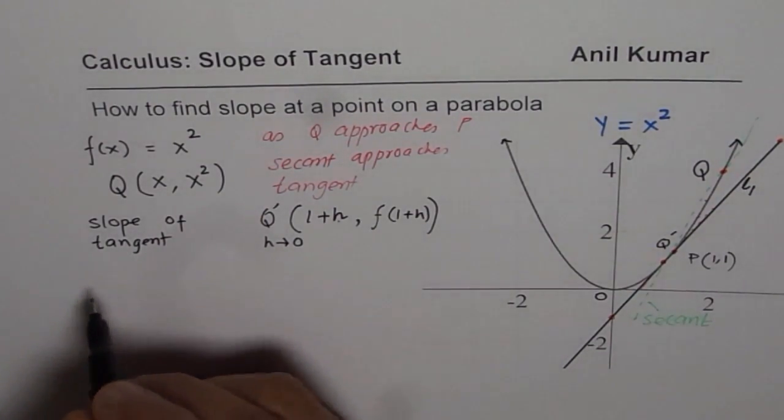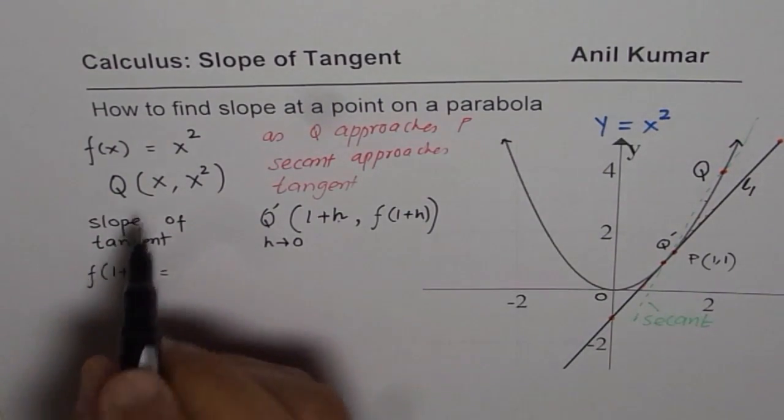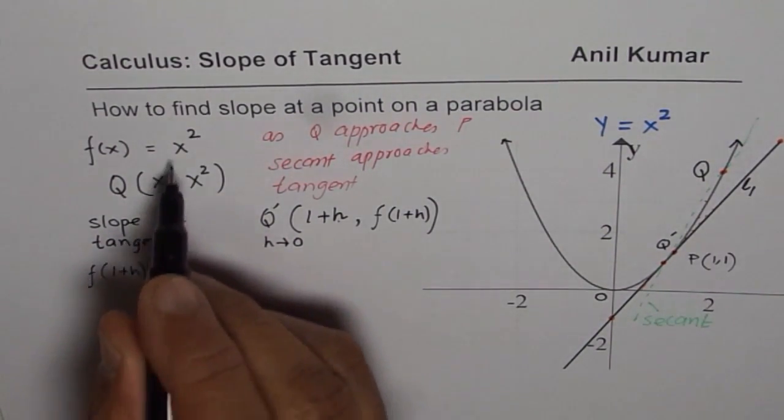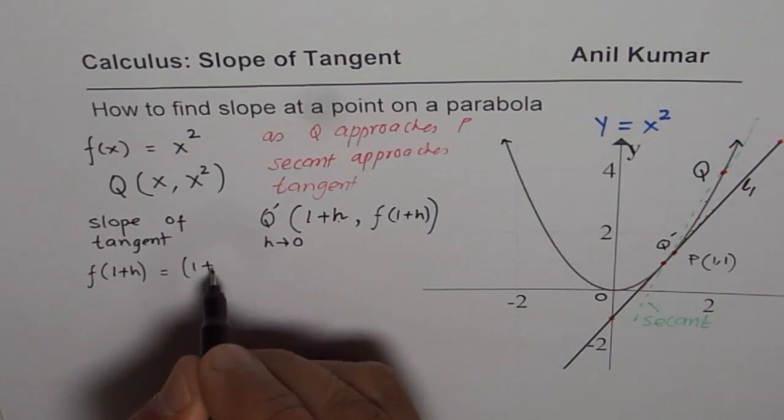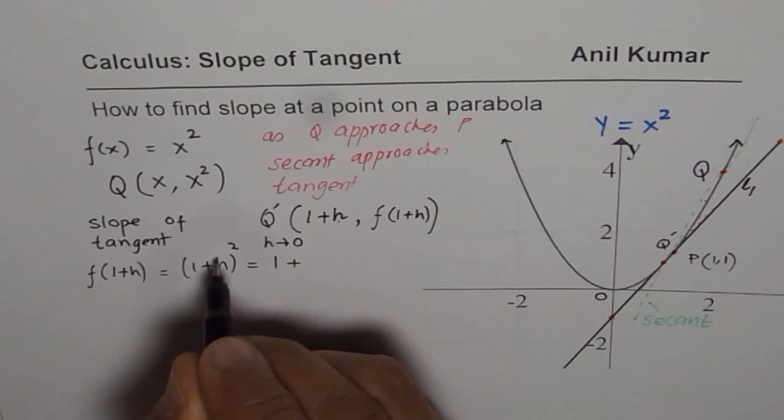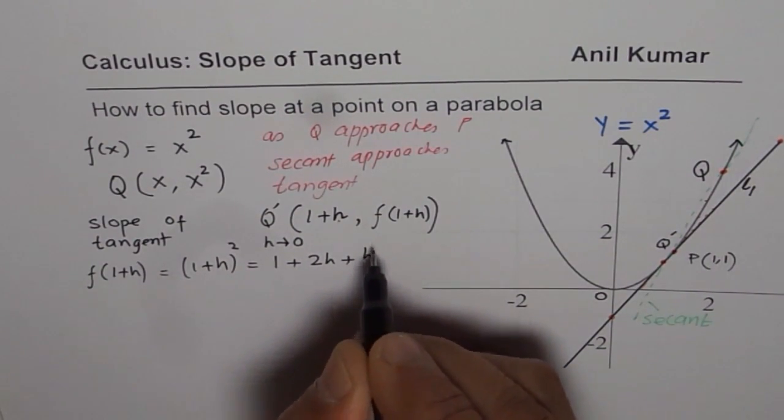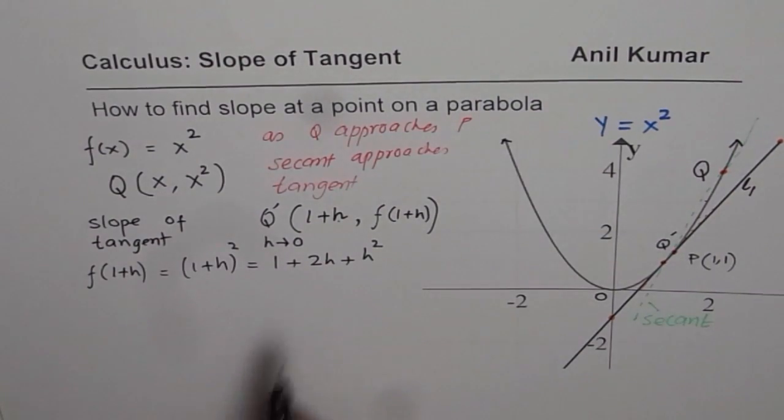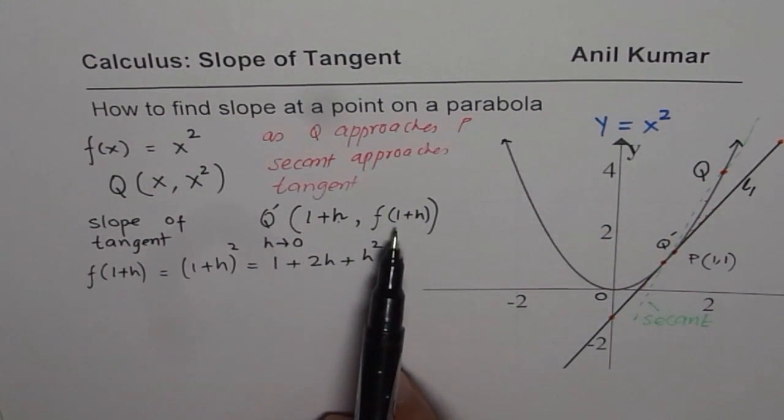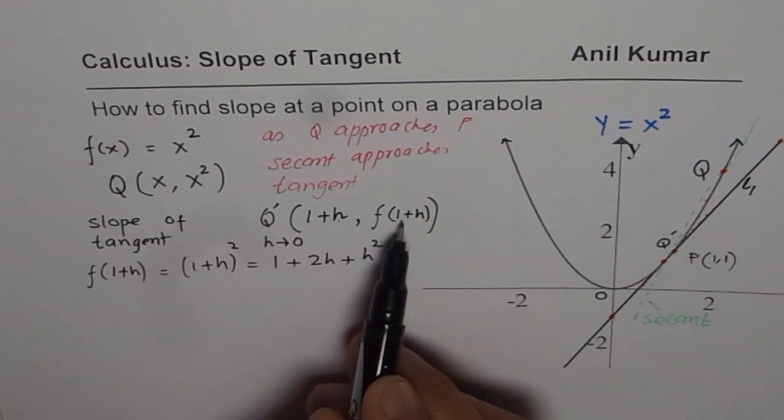So let us find what is F of 1 plus H. So I will substitute in place of X square, 1 plus H. So I get (1 plus H) whole square, which is 1 square plus 2 times H plus H square. So this is what we get as the Y coordinates of this point Q dash. So we know X and Y coordinates.